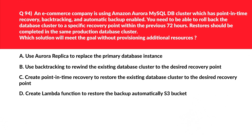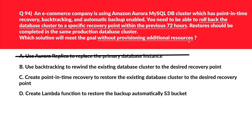This question will test your concepts on Amazon Aurora. Let's first look at option A — use Aurora replica to replace the primary database instance. The purpose of Aurora replica is to improve performance or provide high availability; it won't help to roll back the database cluster to a specific point in time. Hence, incorrect choice. Let's move to option C. It says create a point-in-time recovery to restore the existing database cluster to the desired recovery point. Point-in-time recovery can meet the goal, but it will create a new database cluster. The question states no requirement to create a new cluster, and also mentions no provisioning of additional resources — the restore should be in the same production database cluster. Therefore, it's not the best answer.